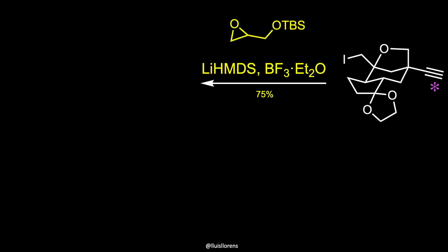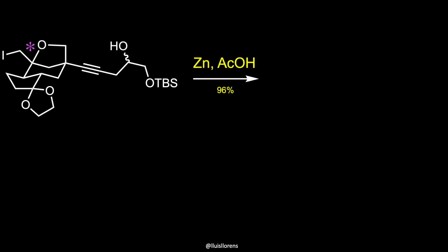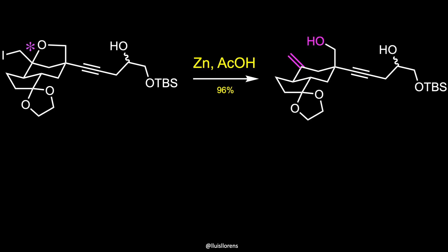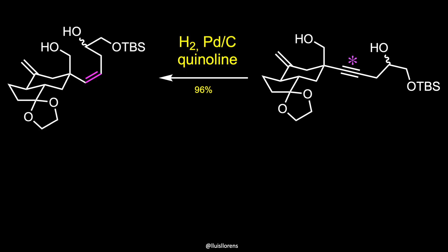The protonation of the terminal alkyne and addition of the epoxide resulted in the formation of an inconsequential mixture of diastereomers. In the next step, the iodoether protecting group was reductively cleaved through the action of zinc powder, and the resulting product was then hydrogenated under the action of palladium on carbon poisoned by quinoline, because the traditional Lindlar catalyst failed to deliver the cis-alkyne product.